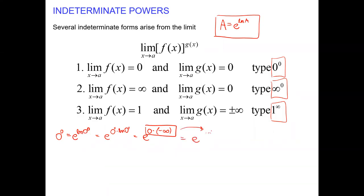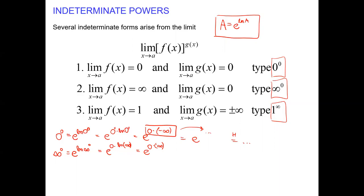For infinity to the power of 0: rewrite as e to the power of ln of infinity to the power of 0. That 0 I can place in front of the logarithmic function. The logarithmic function at infinity goes to infinity — slowly, but it goes to infinity. We end up with an indeterminate form, and we can rewrite as a quotient — hopefully 0 over 0 or infinity over infinity — and apply the L'Hôpital rule.